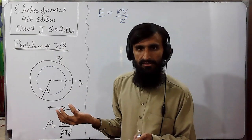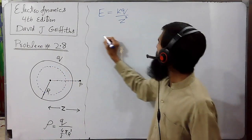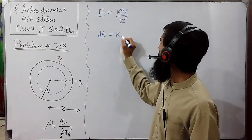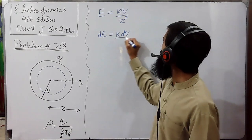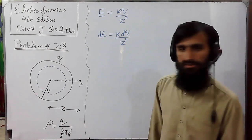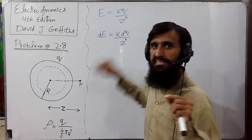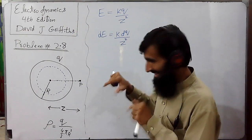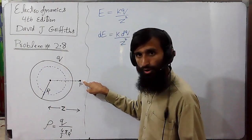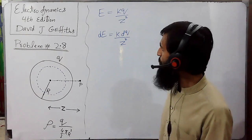Now let's modify this expression for the electric field of this shell, which is our charge element here. The electric field at point P due to this shell will be denoted by dE, and that will be equal to K dQ divided by Z squared. Here Z is the distance from the center of this shell to our point in question, which is also taken as Z.